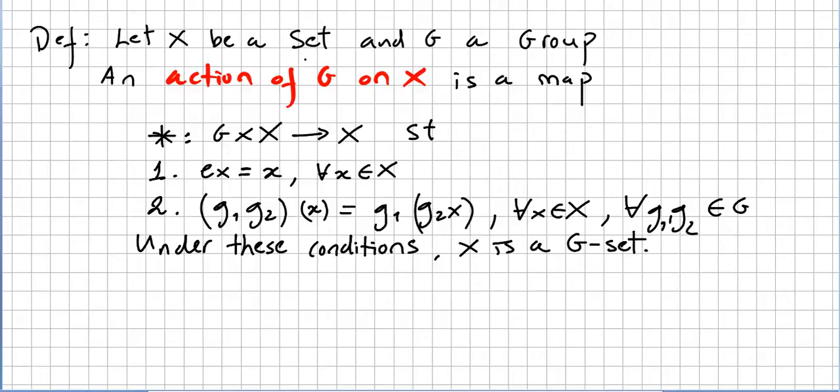Let X be a set and G a group. An action of G on X is a map, let's call it star, from the group G times X into X such that one: identity times X equals X where X is an element in the set. Don't forget that X is a set.